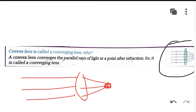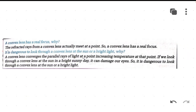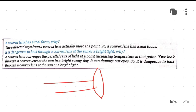Therefore this lens is called a converging lens. Next question: a convex lens has a real focus — why? The answer is that the refracted rays from a convex lens actually meet at a point, so a convex lens has a real focus. When parallel rays of light come in, they converge at a single actual point — all the refracted rays meet at that real point, so we say a convex lens has a real focus.